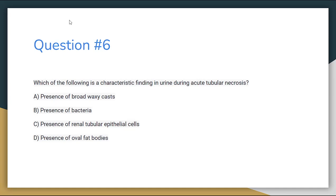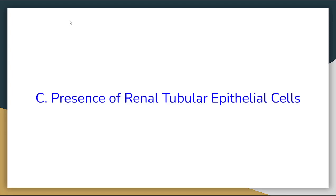Number 6. Which of the following is a characteristic finding in urine during acute tubular necrosis? Letter A: Presence of broad waxy casts. Letter B: Presence of bacteria. Letter C: Presence of renal tubular epithelial cells. Or letter D: Presence of oval fat bodies. The answer for number 6 is letter C, Presence of renal tubular epithelial cells.